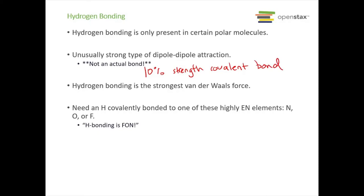The way that we have hydrogen bonding is you need to have a hydrogen that is covalently bonded to one of the three most electronegative elements: either nitrogen, oxygen, or fluorine. The way you can remember it: hydrogen bonding is fun — N, O, F. If you have a molecule where hydrogen is bonded to one of these three, you will have hydrogen bonding present as an intermolecular force.